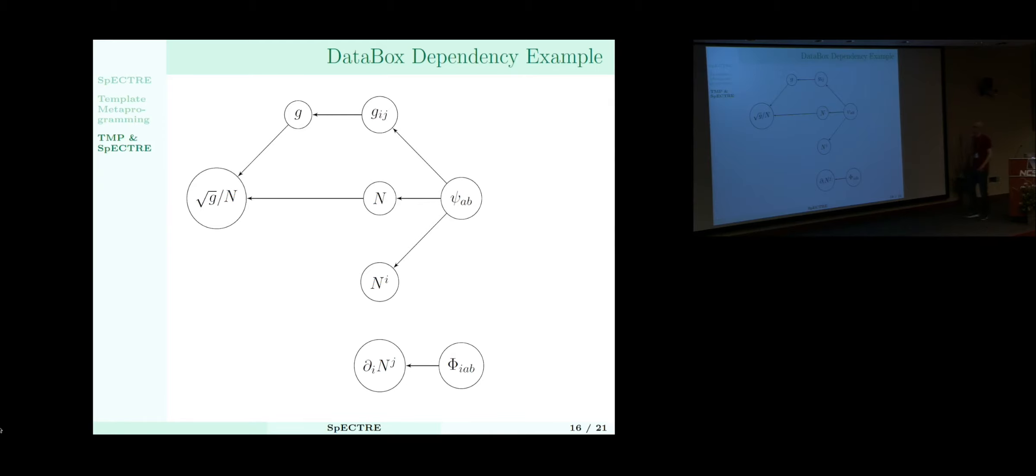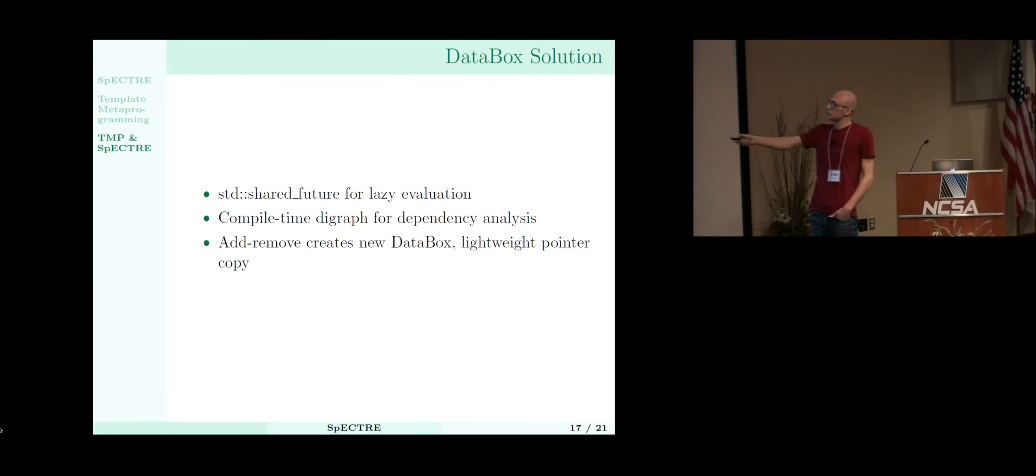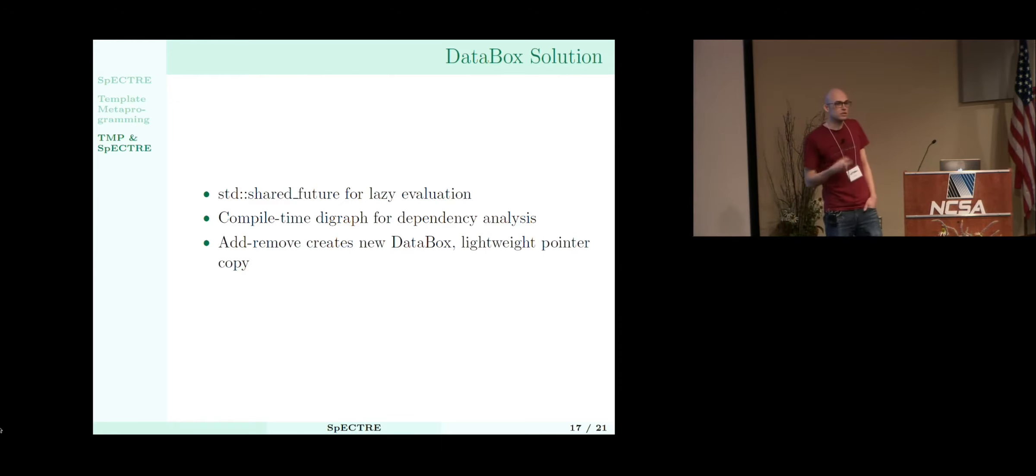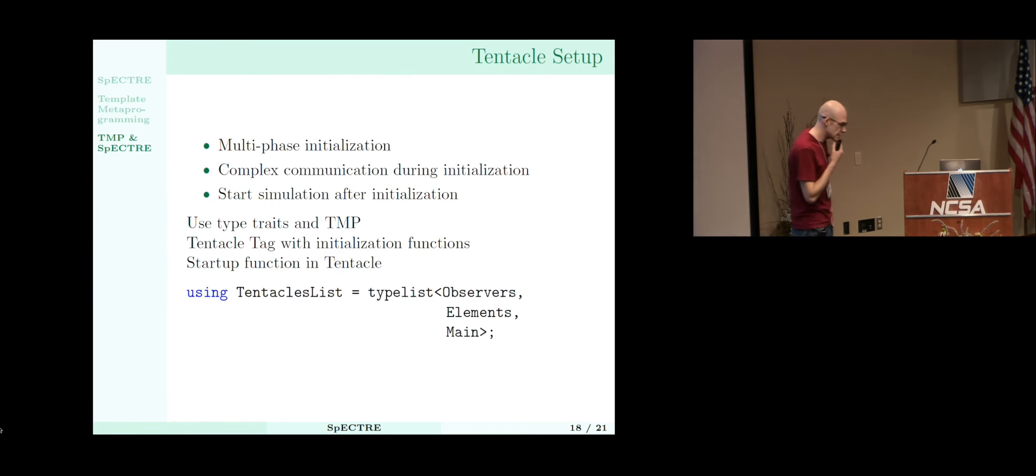So you can do all of that. And so this allows us to really only ever compute things when we need it. We store the data because once the future has been evaluated, it just hangs out there. We can keep the result as long as we need it. And then when the result is no longer valid, we just reset it. It's really, so what this means is you can do really complicated long computations, and these dependency graphs can get huge. And the compiler will just take care of all of it. So like I was saying, the solution, you use shared futures for the lazy evaluation. You build a compile time dependency graph, and then you analyze that when necessary.